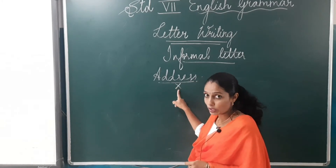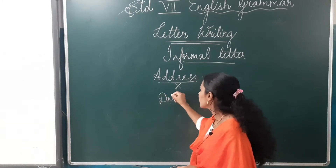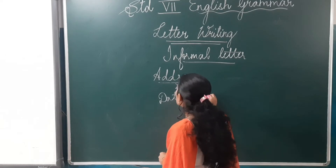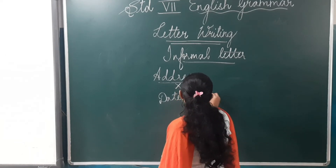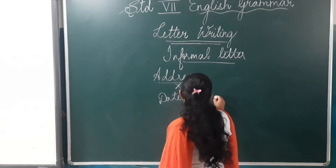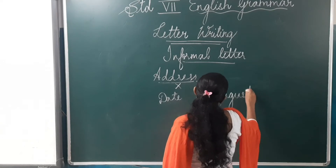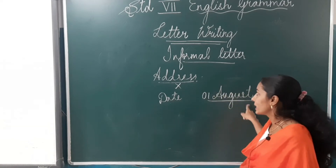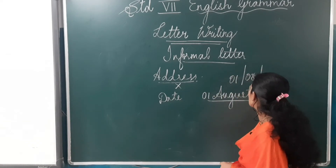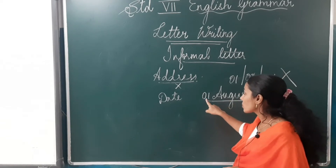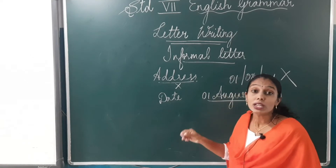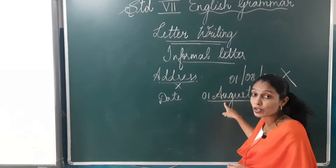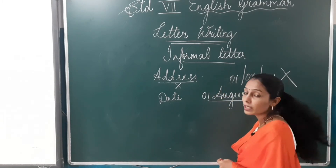Once you write the address, you leave one line, and then you will write the date — the day on which you are writing the letter. How are you going to write the date? If today is 1st August, you write: 1st, then August, then 2021. This is the formation of how to write the date. This is the wrong formation — you are going to write 1st August. You have to mention the name of the month. You are not going to put just the number; you are going to mention the full name of the month and the year.